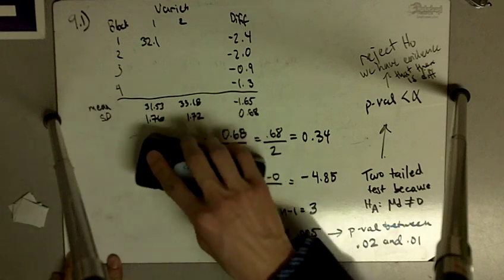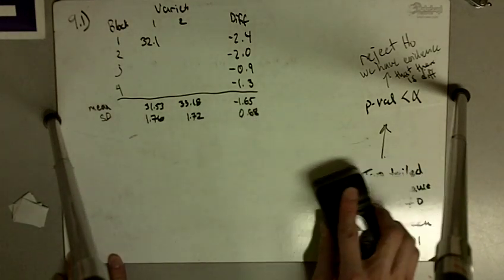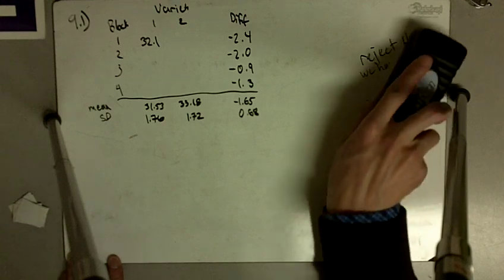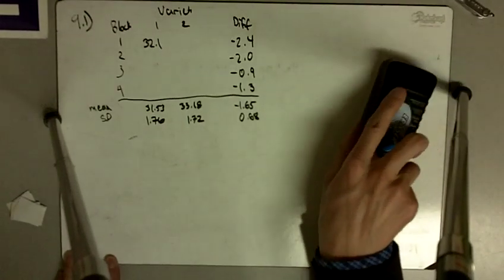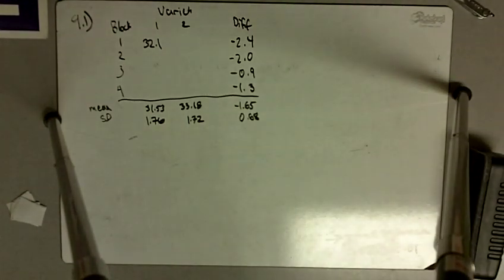Part C asks us to do it the incorrect way, treating these as two independent samples rather than a paired design.